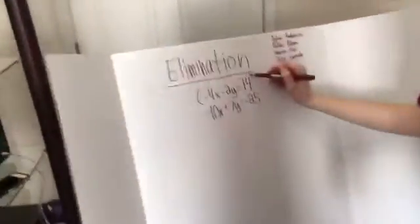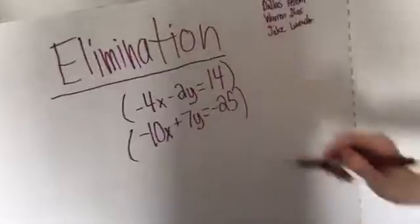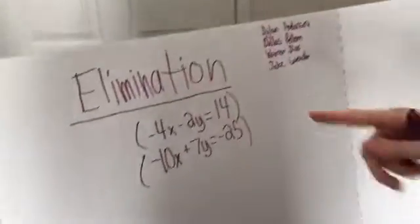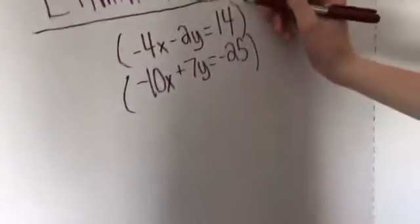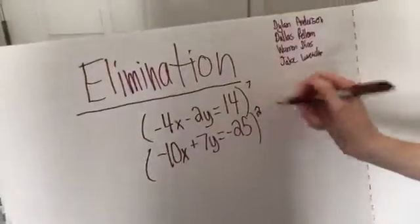So the first thing we're going to want to do is make these equivalent so we can cross one of them out. So we're going to put parentheses around them. For this one, we're going to do variable 7, then we're going to do 2.